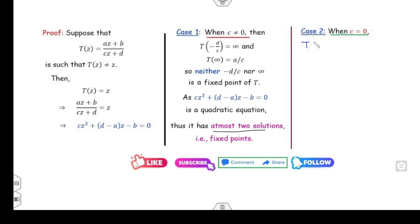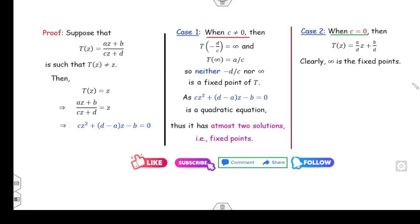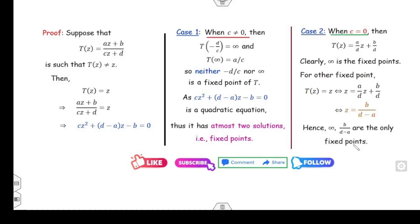For the second case, when c = 0, T(z) becomes (a/d)z + (b/d). Then T(∞) = ∞, so infinity is one fixed point. Substituting c = 0 into the equation gives (d − a)z − b = 0, so z = b/(d − a) is the second fixed point. Therefore z = ∞ and z = b/(d − a) are the two fixed points of the Möbius transformation.